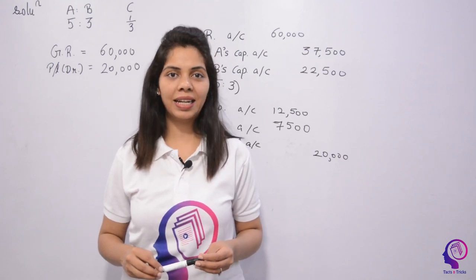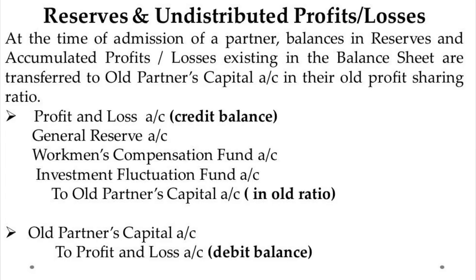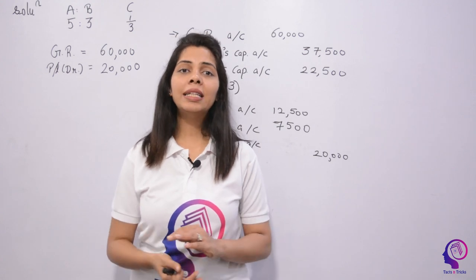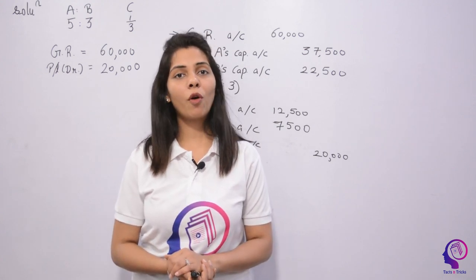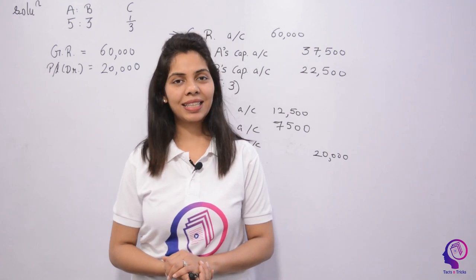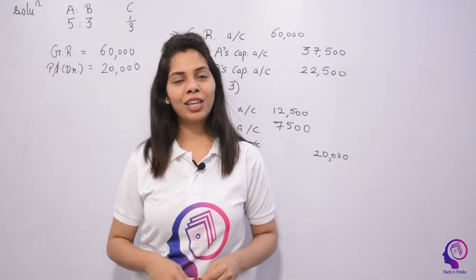Let us revise it once again. All accumulated profits, losses, and reserves are distributed among the old partners in their old ratio, and the journal entries are as follows. I hope you are clear with this topic. If you have any doubts, you can write them down in the comment box. Thank you.